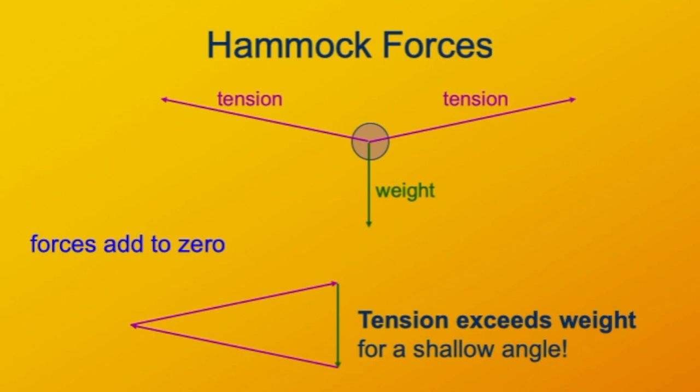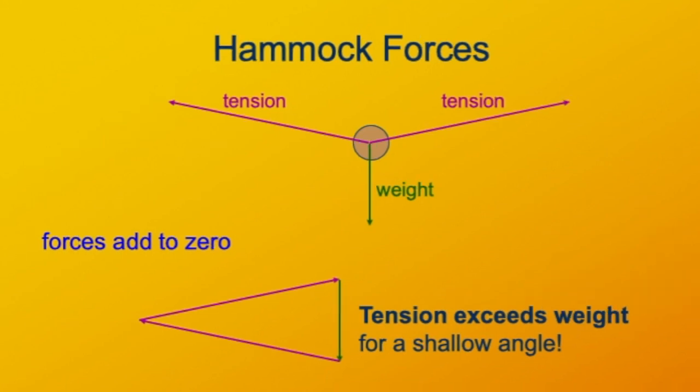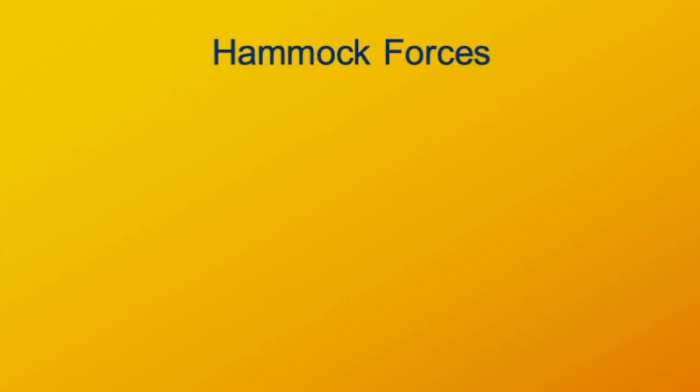you notice the magnitudes of the tension vectors are both greater than the magnitude of the weight. So for a shallow angle, the tension in the cable exceeds the weight of the person in the hammock, even though there's two cables and only one person. Now I'd like to get quantitative with this to say the exact ratios between tension and weight, besides just eyeballing it and saying that the tension is greater than the weight. Here's how we can do that.